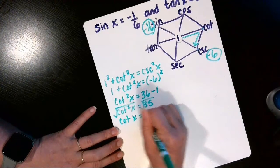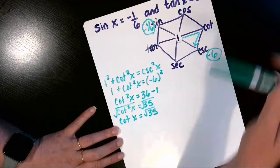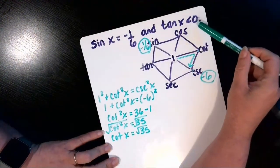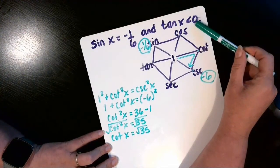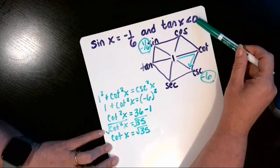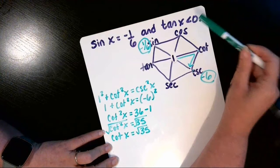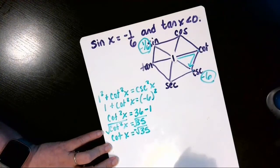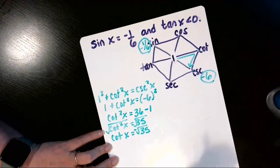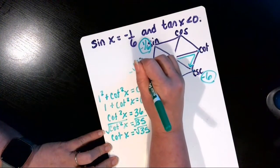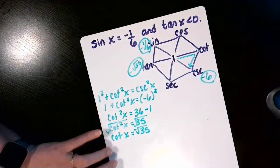When we square root both sides, cotangent is the square root of 35. But since it tells us up in our given information that tangent is negative, cotangent must also be negative because they're co-functions, so that cotangent will be negative square root of 35 and we'll put that on our trig identity hexagon.